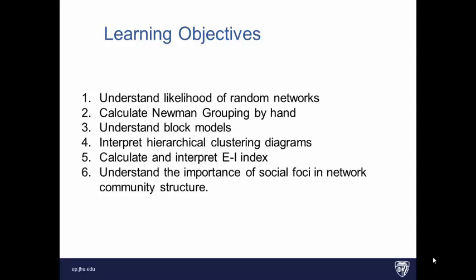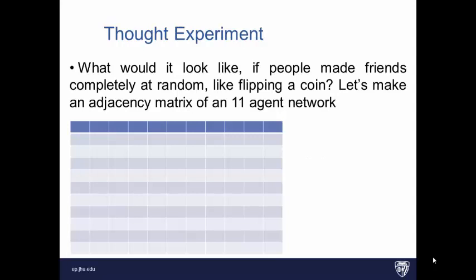The learning objectives are to understand the likelihood of random networks actually occurring in the real world, and we'll explain what those mean in a minute. We're going to have you calculate one clustering algorithm by hand, and then the remaining objectives are certain types of analysis you will do with subgroups, block models, hierarchical clustering diagrams, the EI index. And then it's important to understand how social foci that we discussed in previous lecture relate to network community structure.